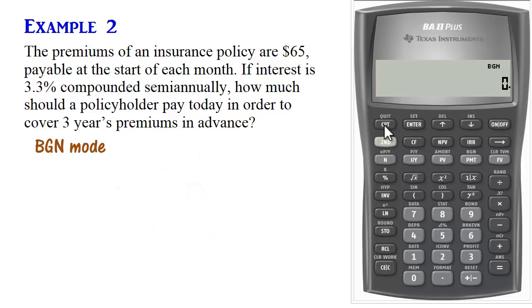Next, we need to set our PY and CY. Payments are made at the start of each month, so we'll set PY to 12. 2nd PY, 12, enter, scroll down. Interest is compounded semiannually, so CY will be 2, enter, and then second, quit.